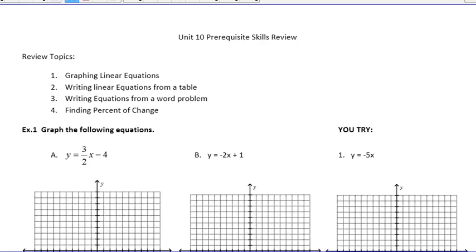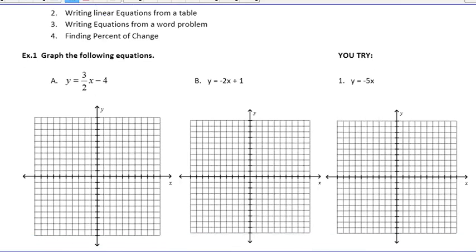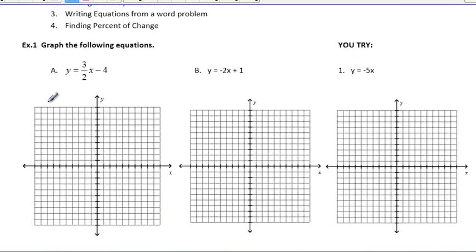Graphing the following equations. Looking at example one, we have y equals three halves x minus 4. If we remember back, the slope intercept form is y equals mx plus b. Our b is our y-intercept, so where it's going to cross on the y-axis, and our m is our slope. And if we remember, slope is rise over run when graphing.